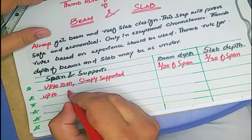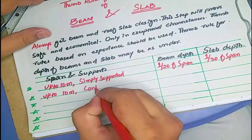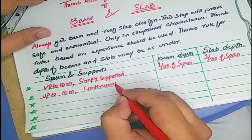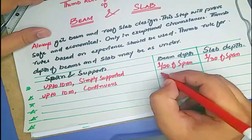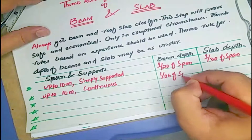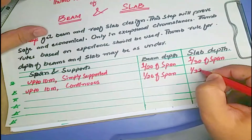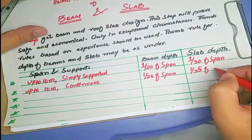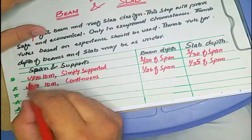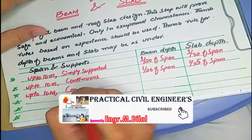If the span is up to 10 meters and the supports are continuous, the depth-to-span ratio for a beam is 1/26, and for a slab it is 1/35 of the span.